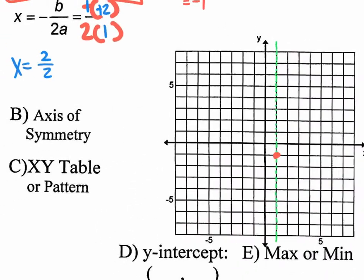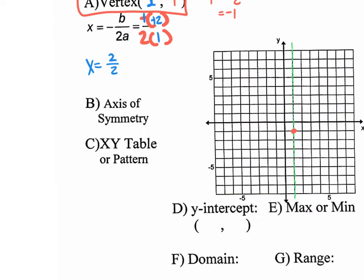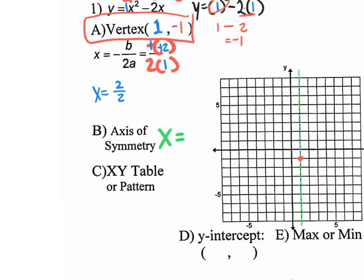The next question is: what is the axis of symmetry? You can't just point at it — you want to state the equation of the axis of symmetry, which is a vertical line. Any vertical line has the equation x equals something. You just state the x value it crosses through. It's the same x value as your vertex, because it crosses right through the vertex. The vertex x value is 1, so the equation is x equals 1. If you were to graph that on a graphing calculator, it would give you that vertical line. So that's another point right there.